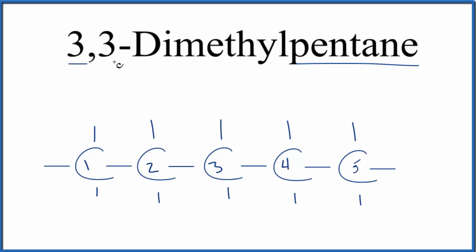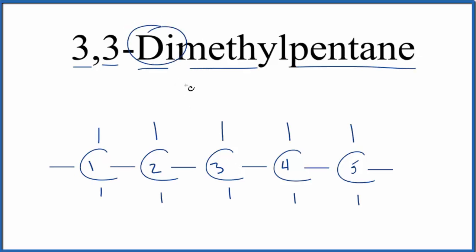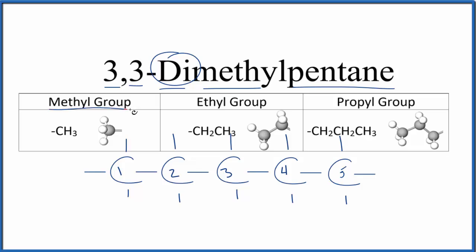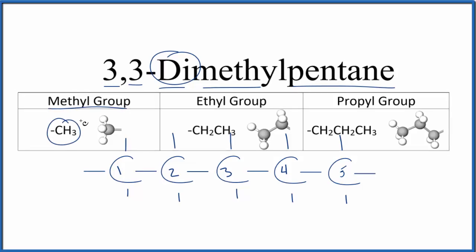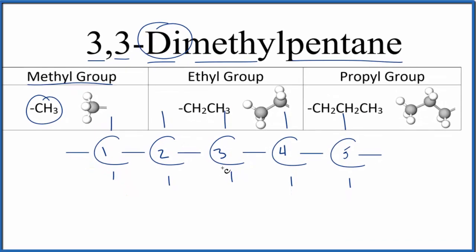So it's 3,3-dimethyl. On the third carbon right here, we're going to put two, that's the dimethyl groups. A methyl group, that's just CH3. We're going to stick it on the third carbon, two of them.